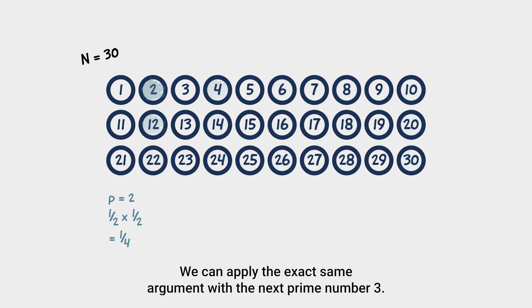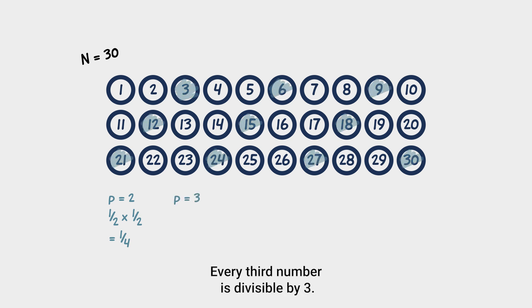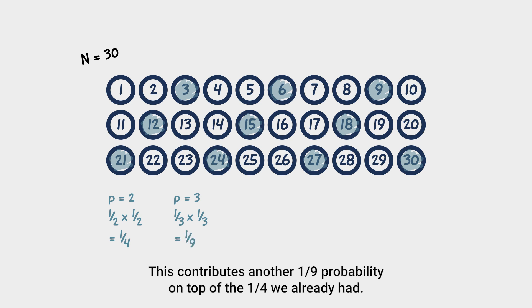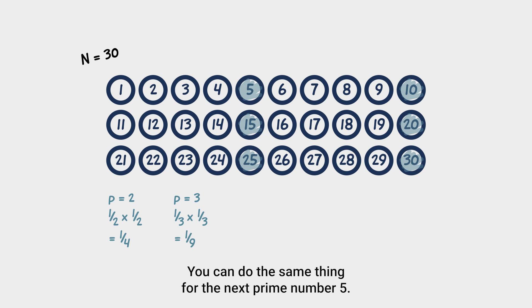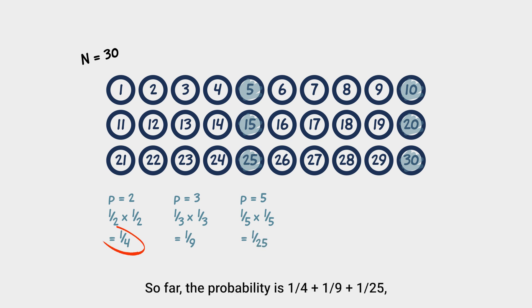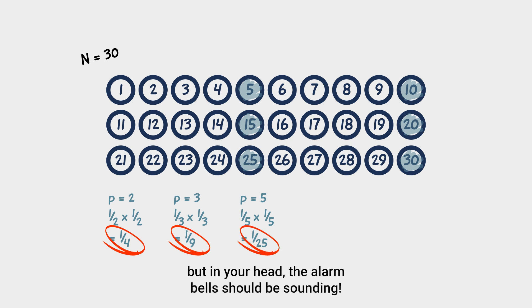We can apply the exact same argument with the next prime number, 3. Every third number is divisible by 3. So here, you have a one-third chance of choosing a number that's divisible by 3 and the same goes for your friend. This contributes another one-ninth probability on top of the one-quarter we already had. You can do the same thing for the next prime number, 5. The probability that you and your friend both choose a multiple of 5 is 1 over 25. So far, the probability is one-quarter plus one-ninth plus one and 25, but in your head, the alarm bells should be sounding.